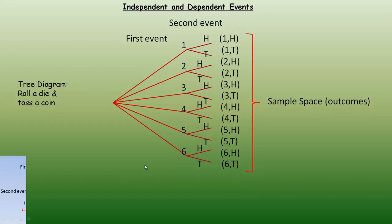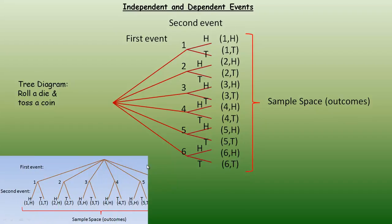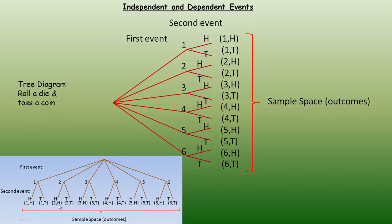Tree diagrams can also be drawn up and down instead of across a page. This represents the same thing — that's the start, then six branches for the six possible rolls of the die, one through six, and then a head or tail for each coin toss, giving all the outcomes of the sample space. You can draw it oriented that way as well.